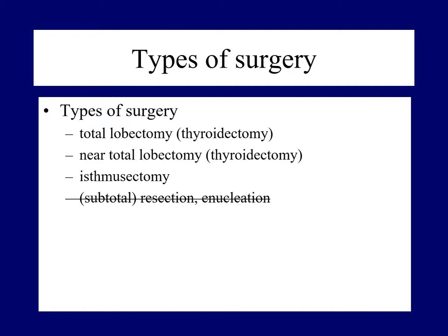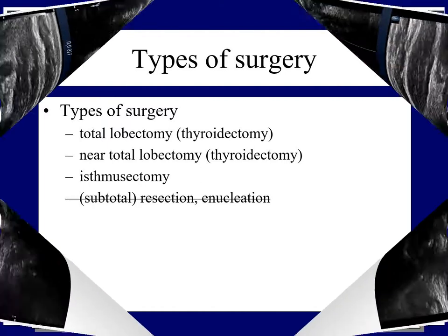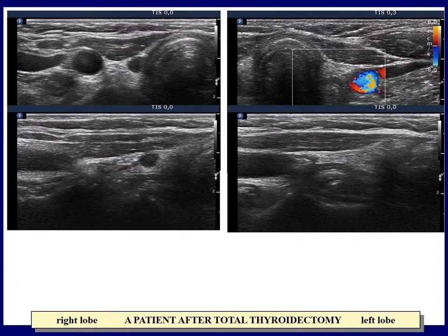Resection and enucleation, the popular types of surgery in the era of the so-called function-sparing approach, are no longer acceptable. We only mention here that the difference between near-total and subtotal thyroidectomy is only quantitative. So let's see some examples.